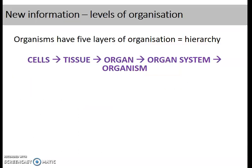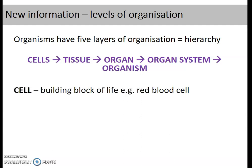We're going to look at the different levels of organisation within a human or an organism. There are five different layers, and this is known as hierarchy. It starts from a cell, goes to a tissue, then to an organ, then to an organ system, and then makes an organism. We'll break those down and see a bit more information about each.